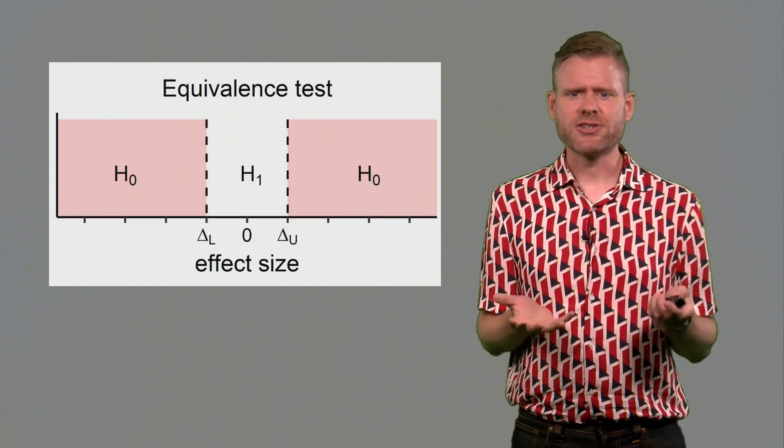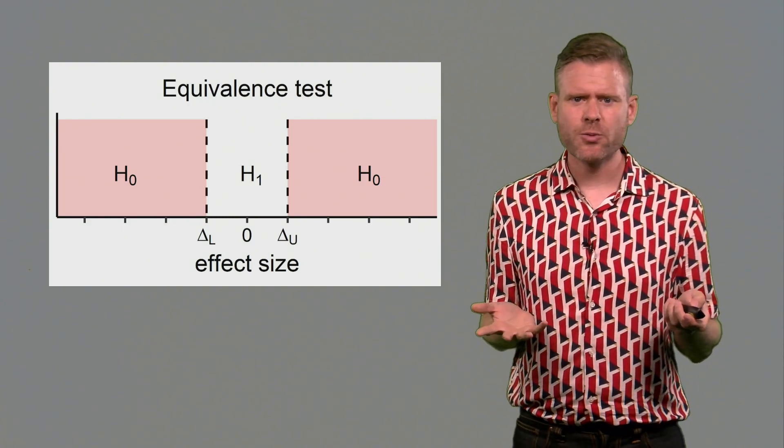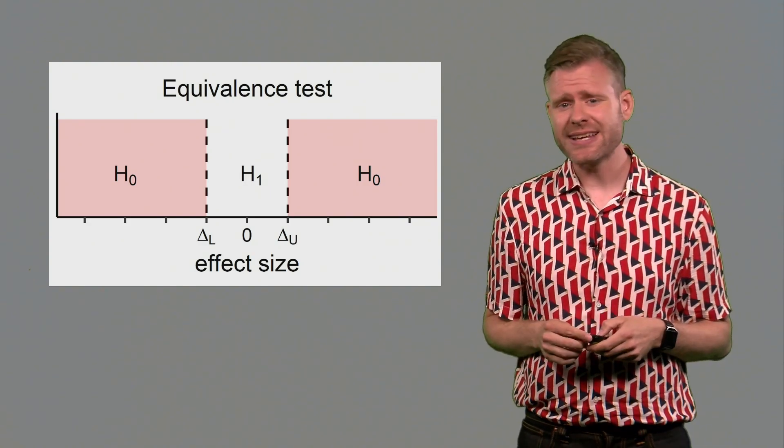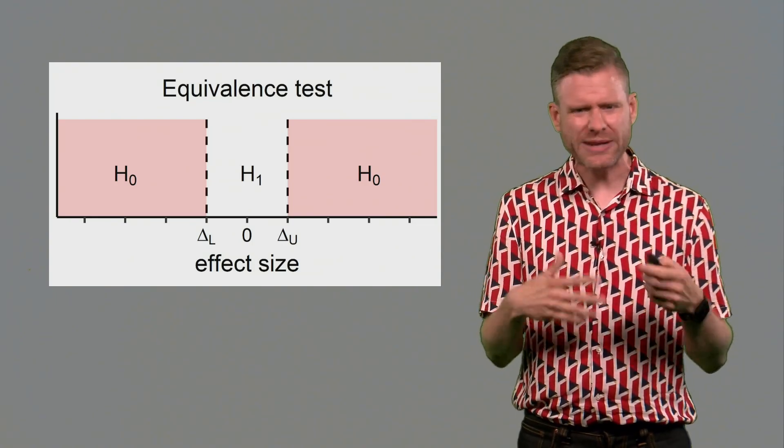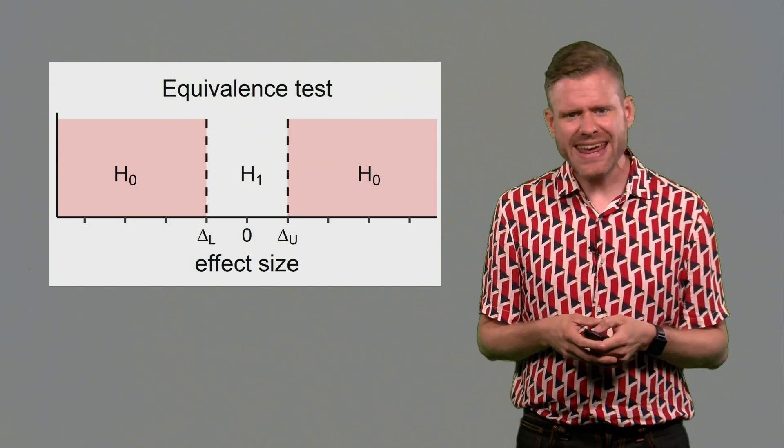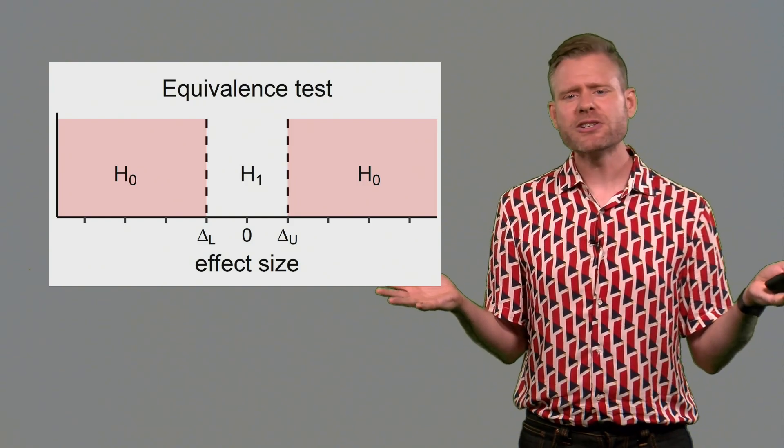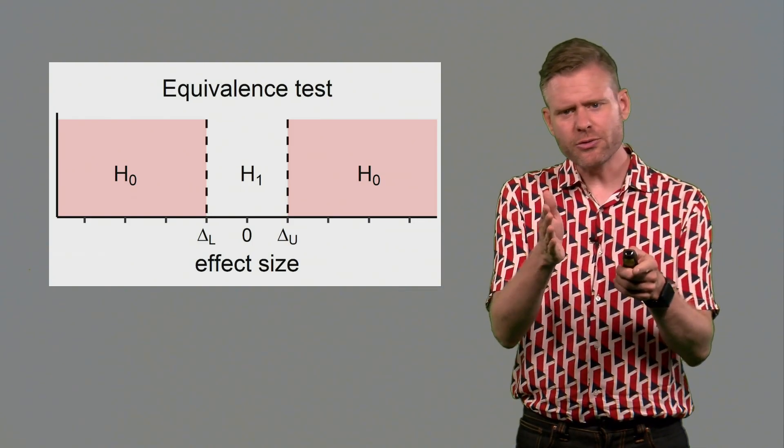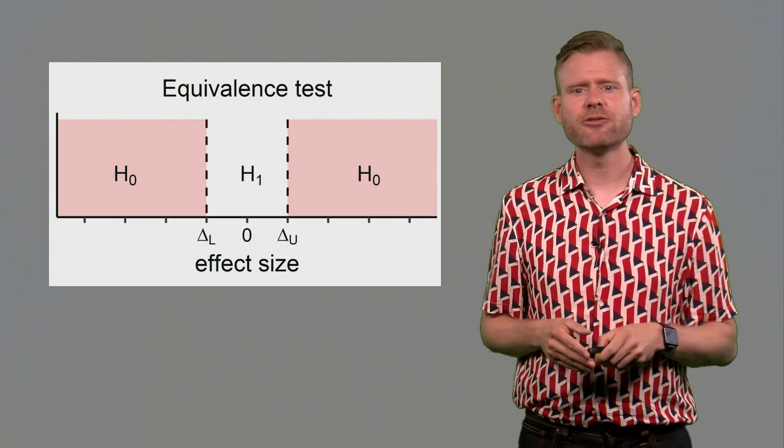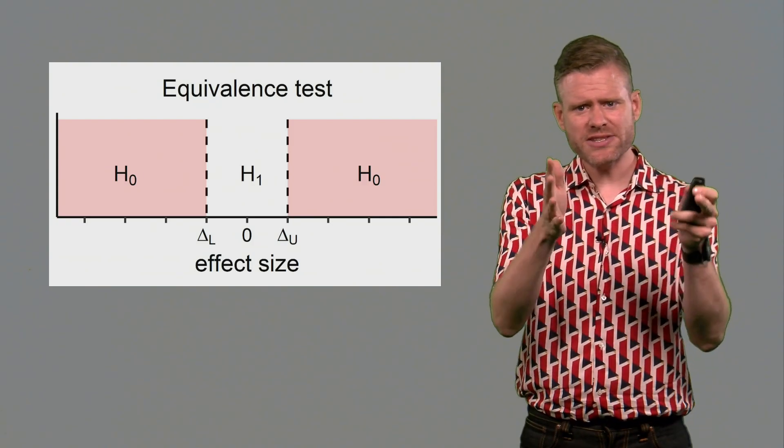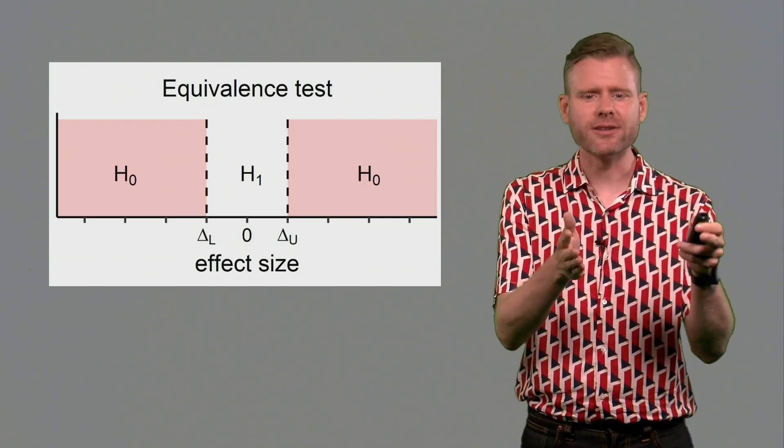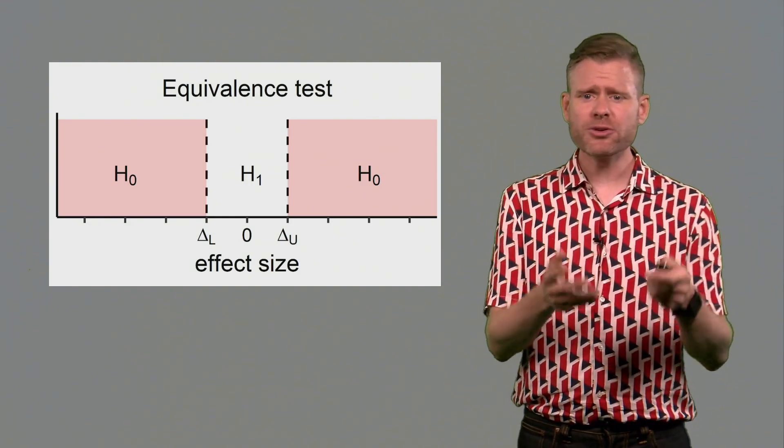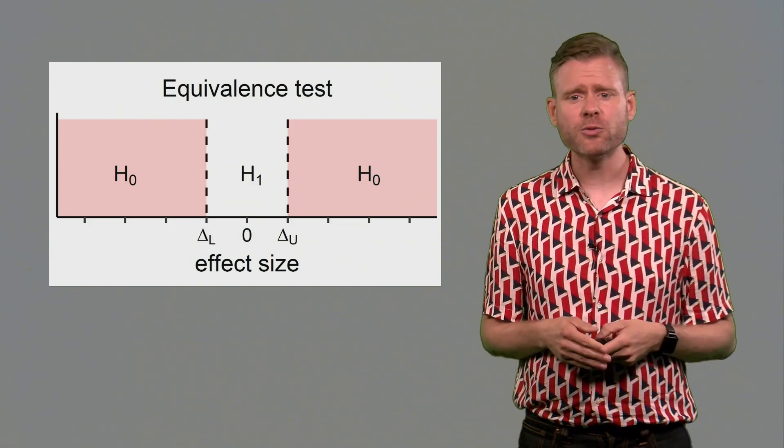Finally, we can make range predictions. An example of a range prediction is an equivalence test, where we are specifying a range around zero of all possible values that we are actually predicting. So, in an equivalence test, we might predict that there is no meaningful difference between two groups. Our null hypothesis is now the range of all values that are large enough to matter. And what we are trying to do is statistically reject the presence of values large enough to matter. Our prediction is that the real value will be close to zero, somewhere in a very specific range. In the case of an equivalence test, this range is always around zero. We want to say that the observed data is equivalent to zero. But in another sense, you can think of an equivalence test as a range prediction that you could put anywhere on a scale. You could predict values that lie between, for example, a value of 0.1 and 0.6.